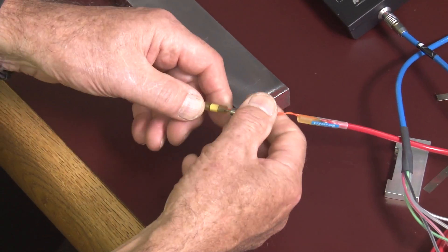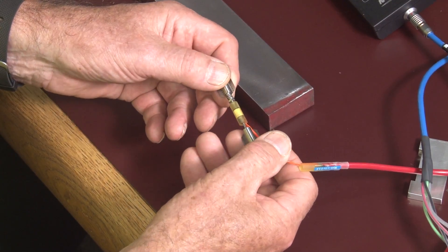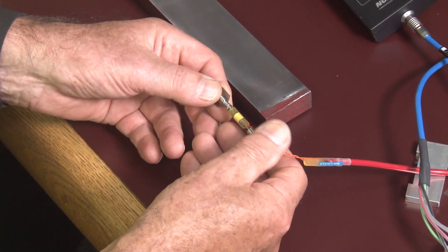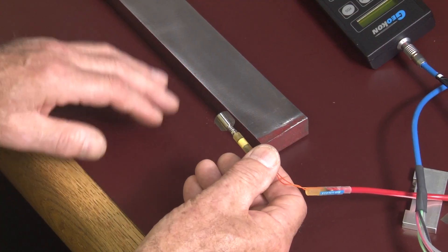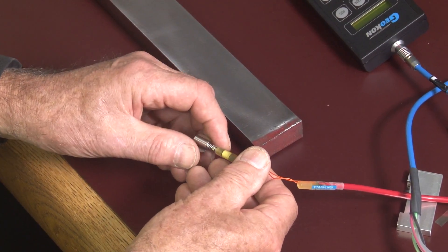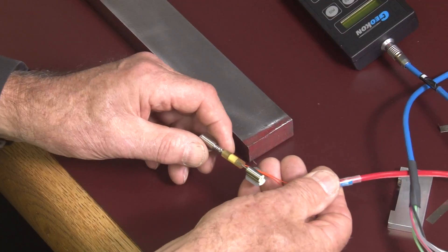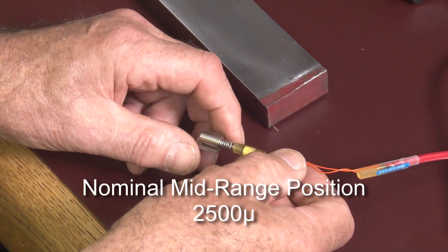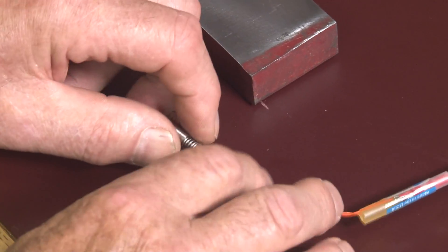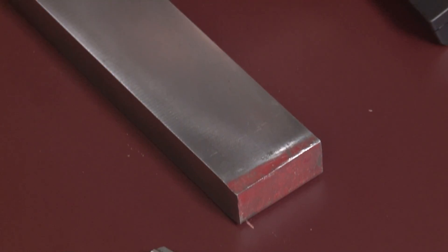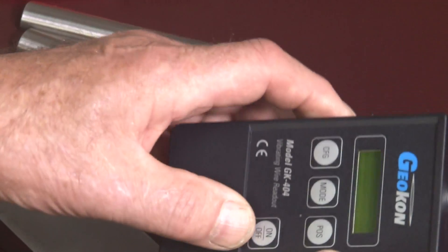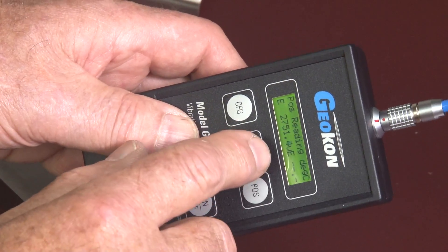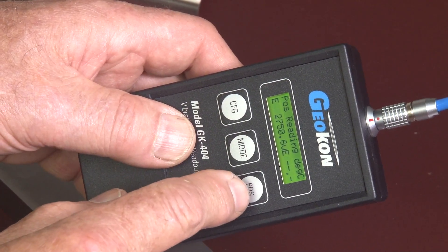Today's subject is the model 4150 vibrating wire strain gauge. This gauge is designed to be spot welded to steel structures. The first thing to do is set the gauge at the proper position in its range, and our nominal mid-range position is 2500 microstrain. I've got this connected to the readout through this cable and clip leads. The gauge is read in position E.